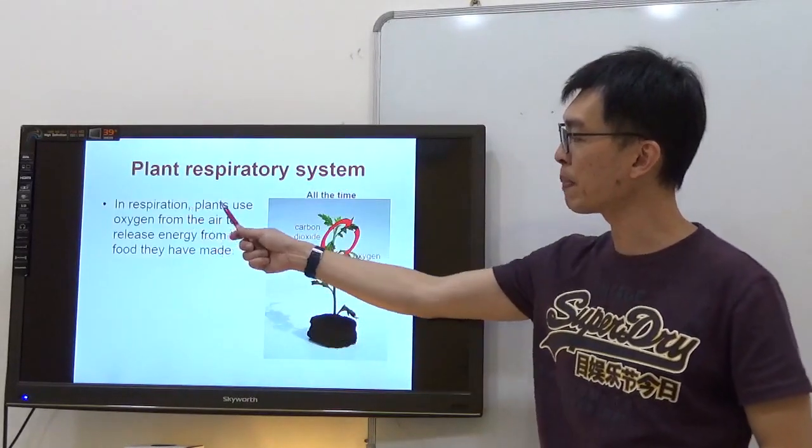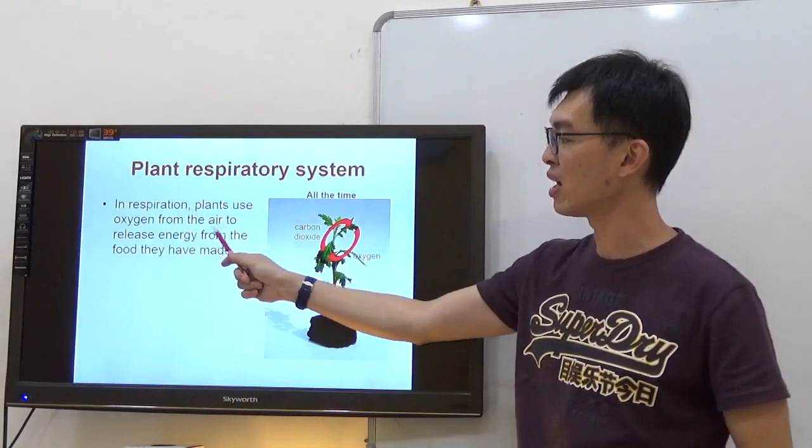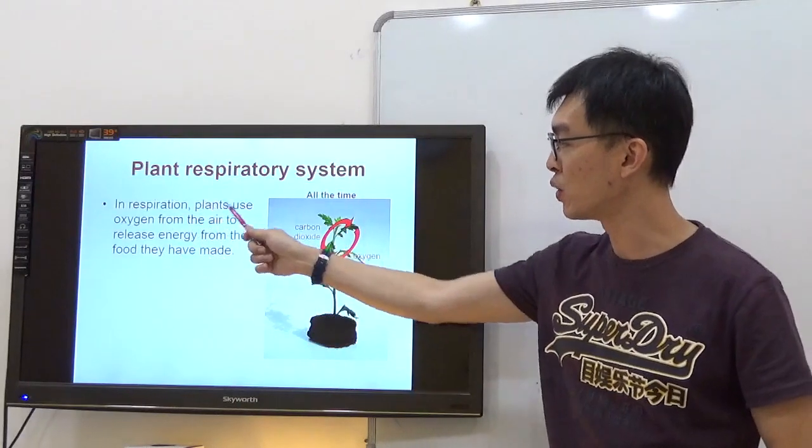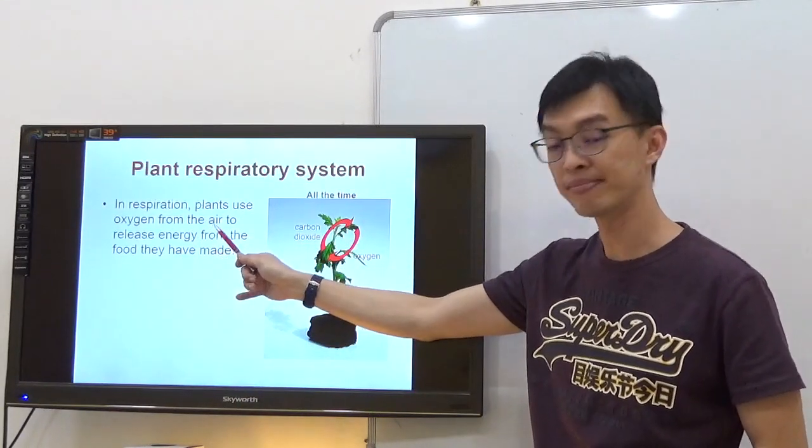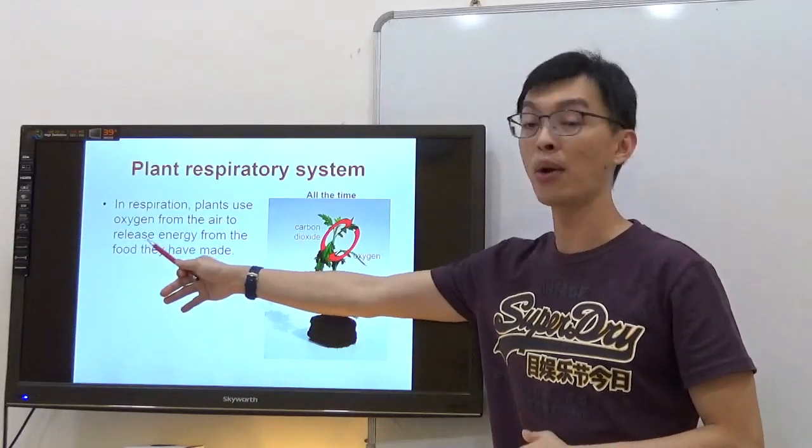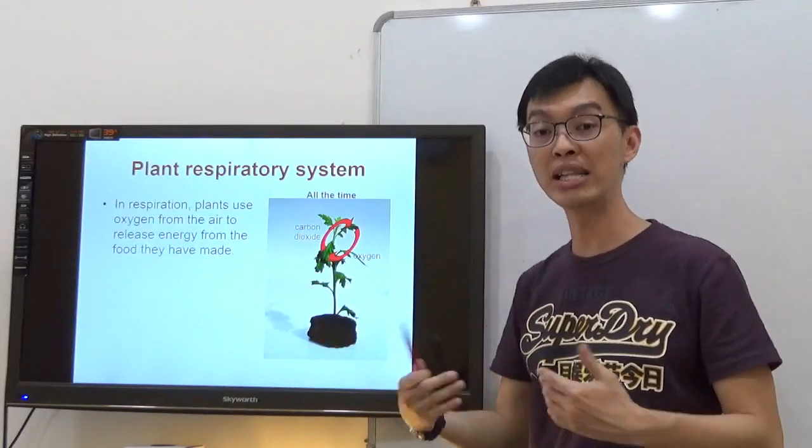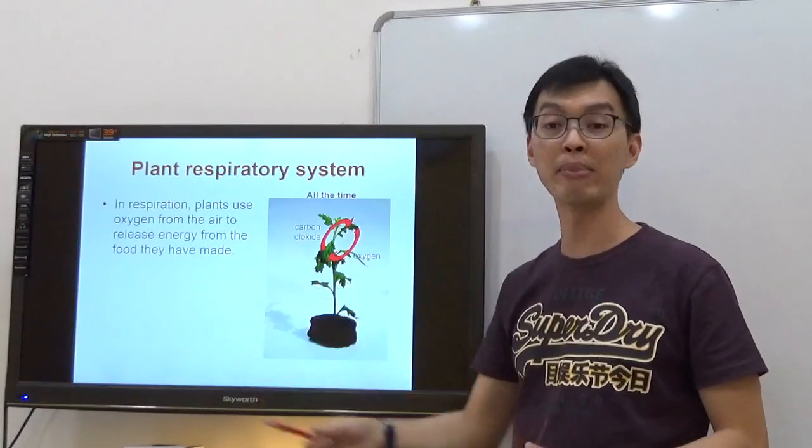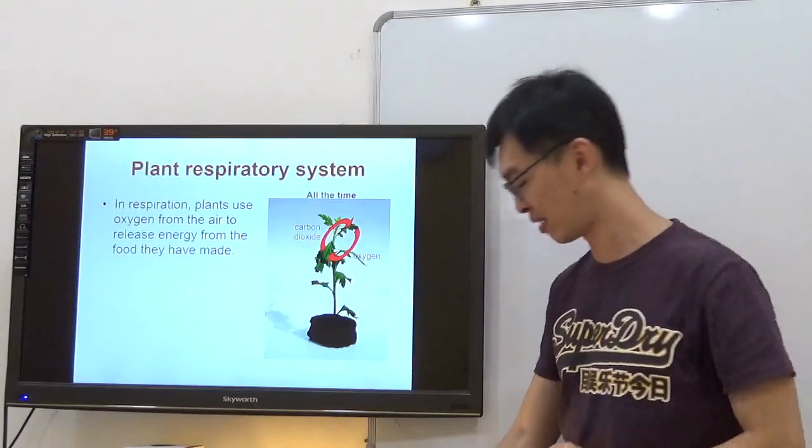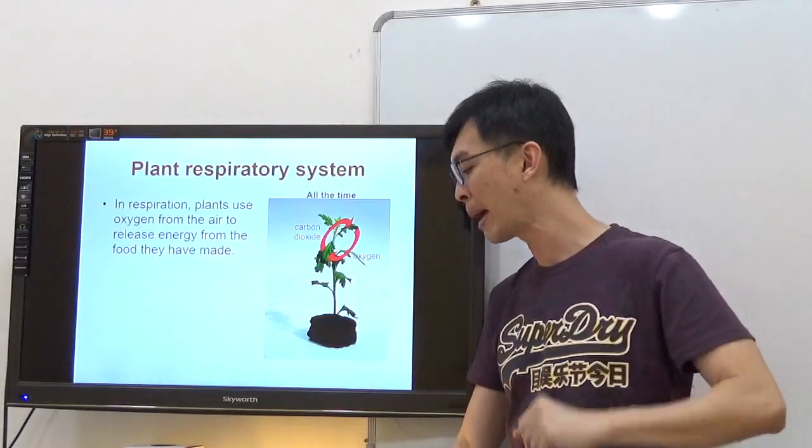In respiration, plants use oxygen from the air to release energy from the food they have made. So they will use the oxygen from the air, meaning they take in oxygen to produce energy, to release the energy from the food they have made. So they make food and then release the energy for different parts of the plant.